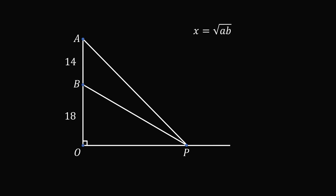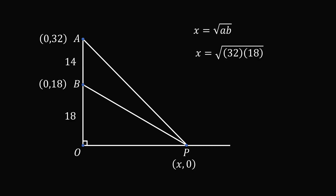So let's apply this formula to our problem. The point B is at (0, 18), then we add 14 to get that the point A is at (0, 32), and we want to solve for the point P, which is (x, 0). Applying a equals 32 and b equals 18, x is equal to the square root of 32 multiplied by 18, and that works out very conveniently to be 24 units. And that's the answer.